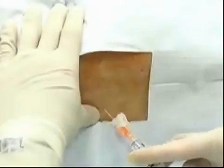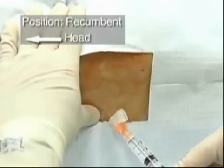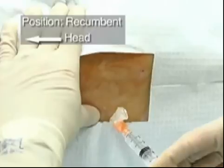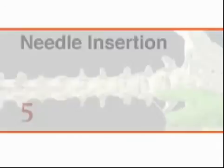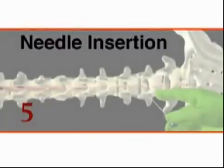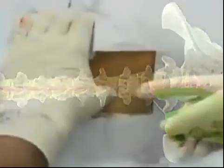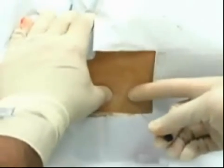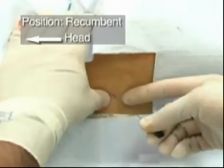You can apply anesthetic cream topically before preparing the skin. After preparing the skin, you can inject local anesthetics subcutaneously. Identify the anatomical landmarks once again and insert the needle.